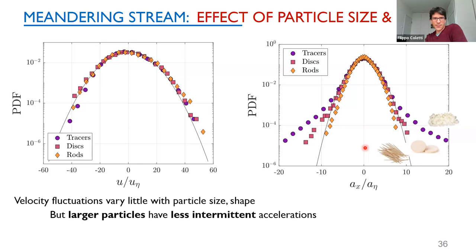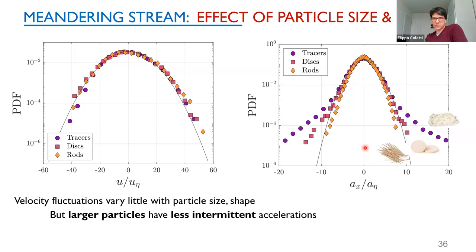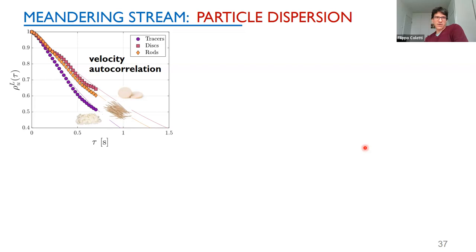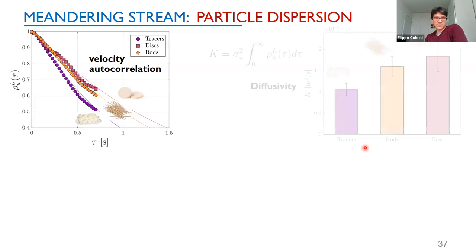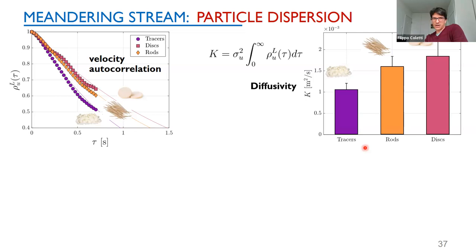This inertial filtering also affects how correlated the particle trajectories are. The Lagrangian velocity autocorrelation decays over longer timescales for the larger discs and rods. Because of inertial filtering, the motion of larger particles is more time-correlated with itself. By Taylor diffusivity — which is the velocity variance times the integral timescale — this also means larger diffusivity. Looking at mean square displacement confirms that larger particles spread measurably faster from their original location.